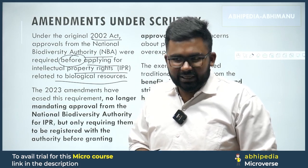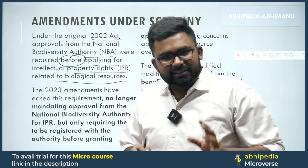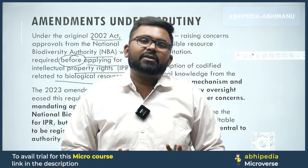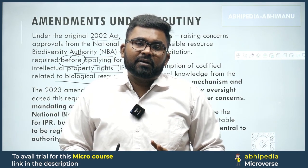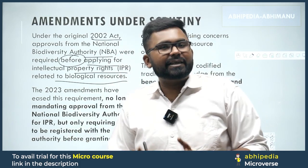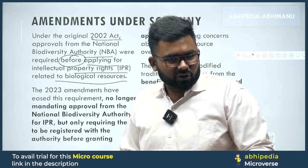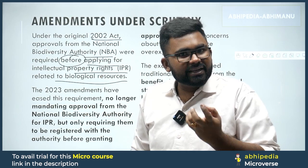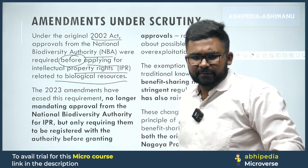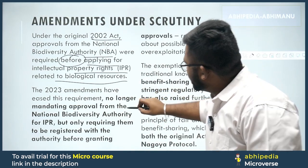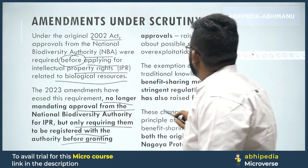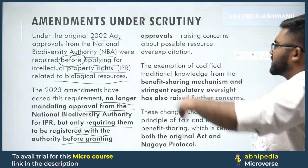For instance, it's not like Hanuman ji took the Sanjeevani herb only as needed — if someone gets an IP on Sanjeevani, you'll find it sold on Amazon and Flipkart in massive quantities, and that exploitation is the problem. This is the most serious environment issue I've come across recently. They have now bypassed the NBA itself. The 2023 amendments have eased this requirement — no longer mandating approval from the NBA for IPR, but only requiring registration with the authority before granting approvals.